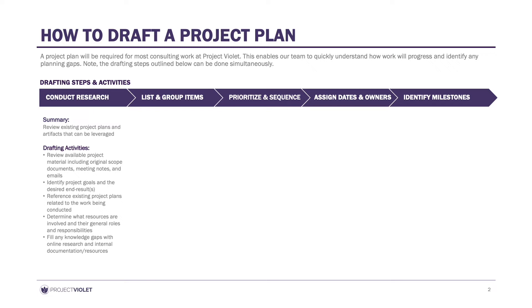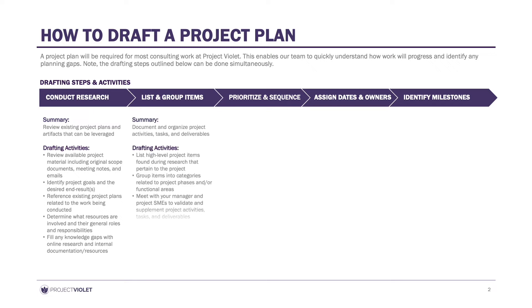Next is list and group activities. Based on your research, start listing the high-level tasks, activities, and deliverables. In this step, don't worry about sequencing or priorities — simply get all your thoughts and ideas into one location. Once you have a few items, you can start grouping these into high-level categories or sections of the project plan.